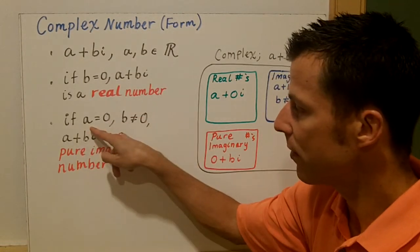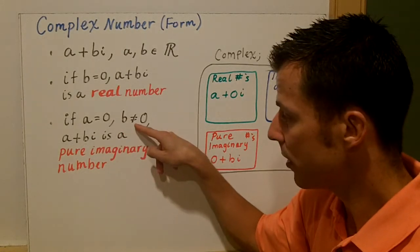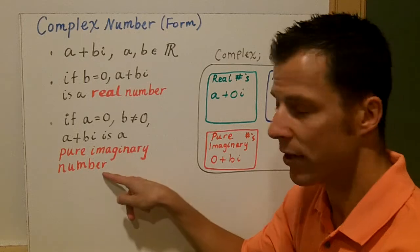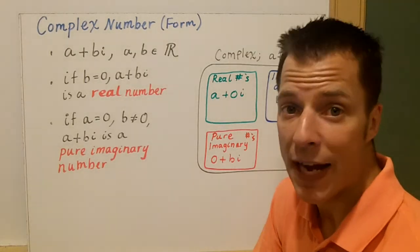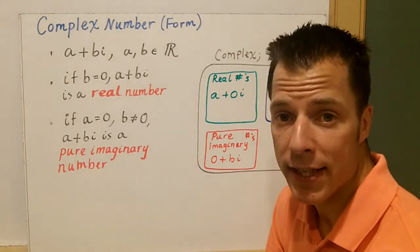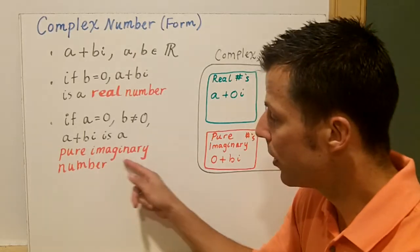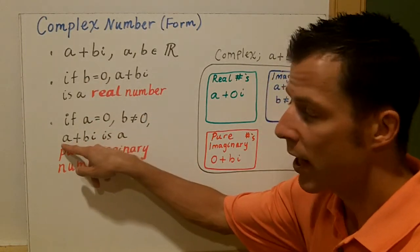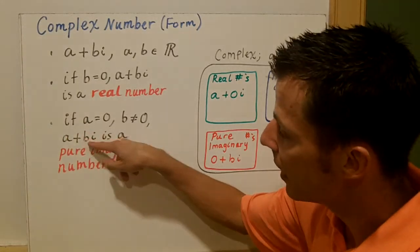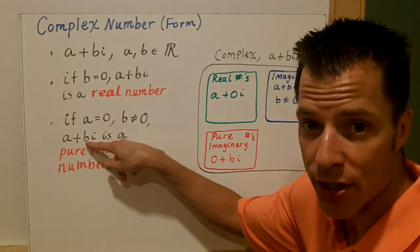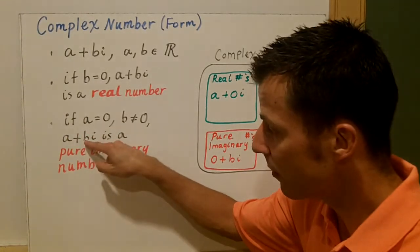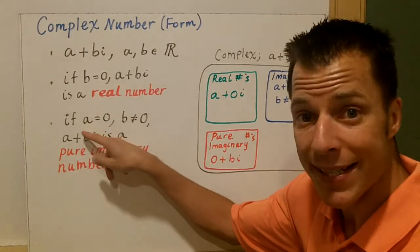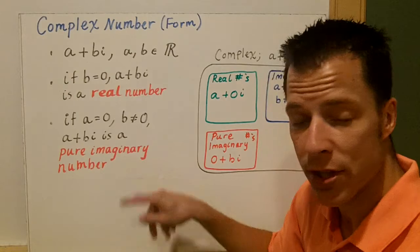If a is zero and b doesn't equal zero, then a plus bi is a pure imaginary number. For example, 5i, 7i, negative 16i — those are pure imaginary numbers because they have no real part. So a is the real part, bi is the imaginary part. If b is zero, you have a real number. If a is zero and b is not, you have a pure imaginary number.